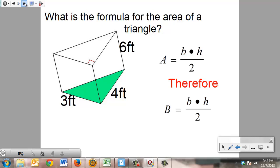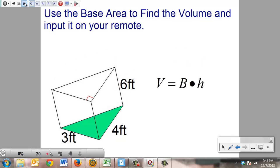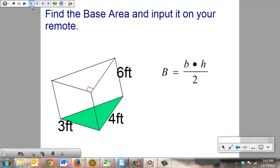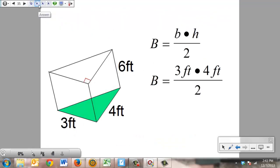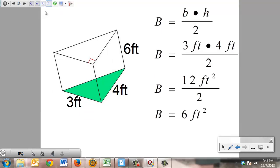With that information, I can go ahead and start working for my base area. I've got 3 different possible numbers: 3 feet, 4 feet, and 6 feet. The 6 feet has nothing to do with the triangle though, and the 3 feet and 4 feet do. They meet at right angles, therefore those are going to be my base and my height. So from there, I'm going to put my 3 feet times 4 feet divided by 2. That will be 12 feet squared divided by 2, otherwise known as 6 feet squared.